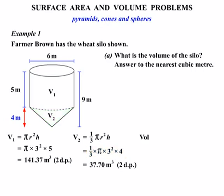Alright, let's work out our total volume now. We just need to add our V1 and our V2 together. So V1, 141.37, add to that our V2, which is 37.70. 141.37 plus 37.7 gives us 179.07.